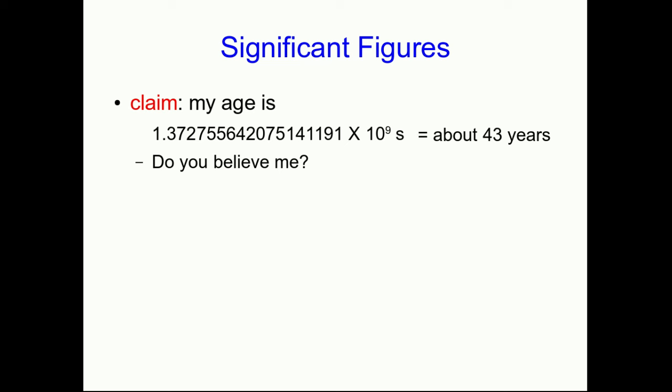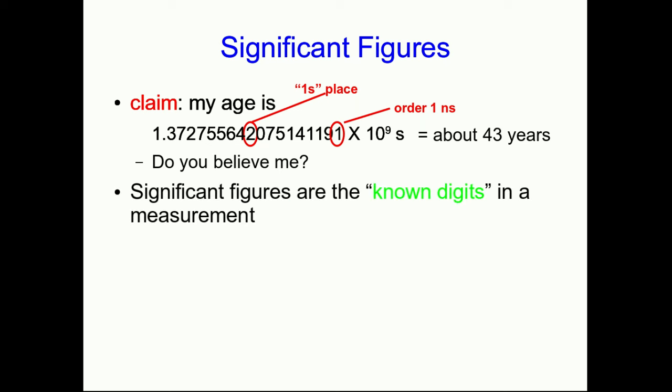If you count digits, then you'll find that the ones place, that two, is right there. So that's the seconds, and every digit after that is telling you fractions of a second, so if you actually count to the last digit, you see that I've given you my age to the nearest nanosecond. Well, do you really believe I know my age to the nearest nanosecond? I'm sure there's a hospital record in Ottawa with my birth time, but I doubt it's accurate to the nanosecond.